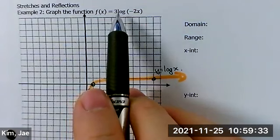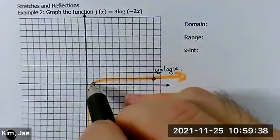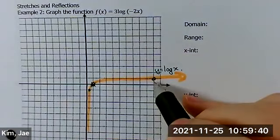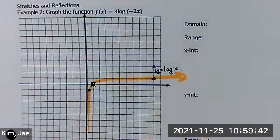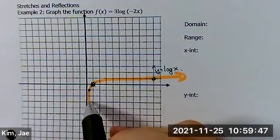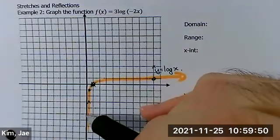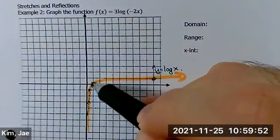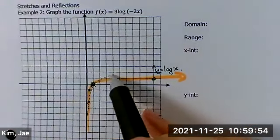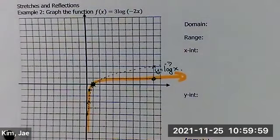Next, vertical stretch. So zero multiplied by 3 is still zero. One multiplied by 3 is now 3. And negative 1 multiplied by 3 is negative 3. So this is my vertical stretch. It's been pushed or pulled this way.